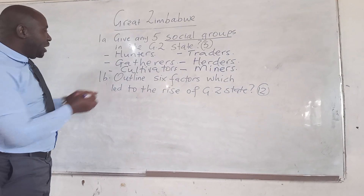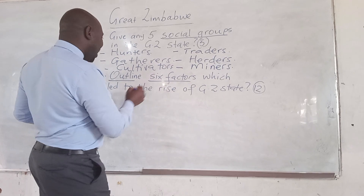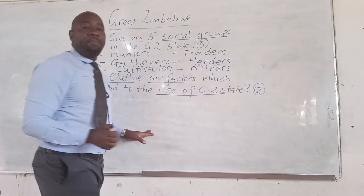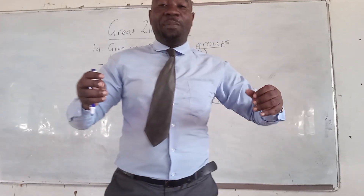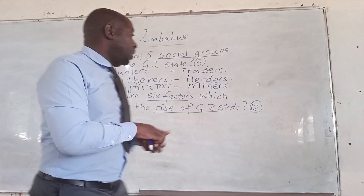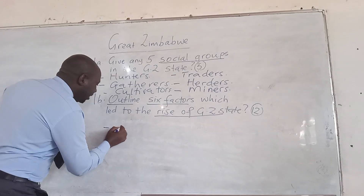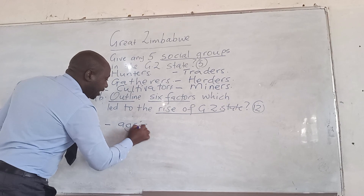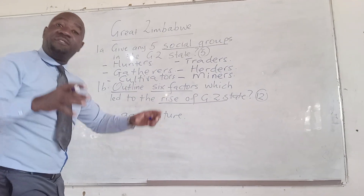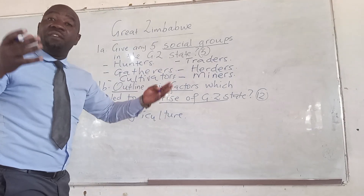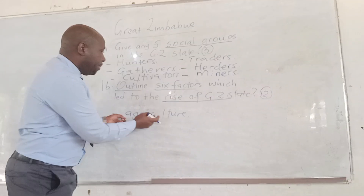Let's go to part B. We are going to outline six factors which led to the rise of the Great Zimbabwe state. The first factor is agriculture — it led the state to rise. The soils at Great Zimbabwe were fertile, and the area received adequate rainfall. So that led to the rise of Great Zimbabwe.